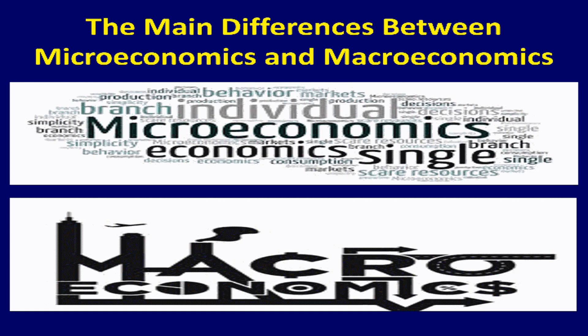I'd like to close this talk with the following. Economics is the study of the allocation of limited resources to satisfy unlimited human needs. Microeconomics is the branch of economics that studies the individual decisions of consumers and firms. Macroeconomics is the branch of economics that studies the economy as a whole. Thank you so much for watching. Please come back for the next video.